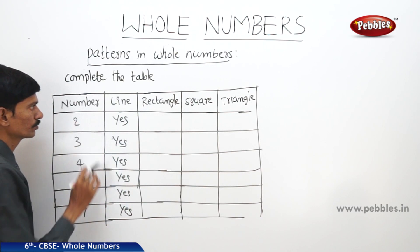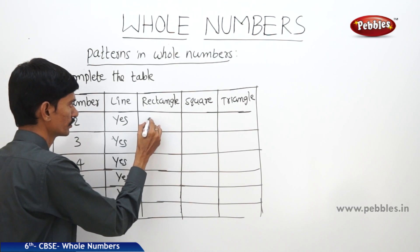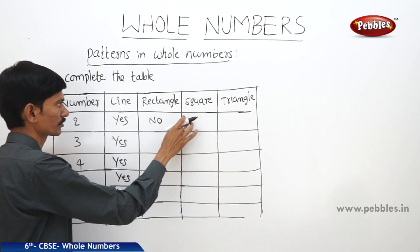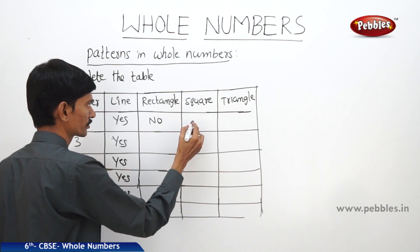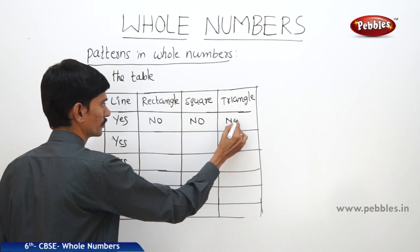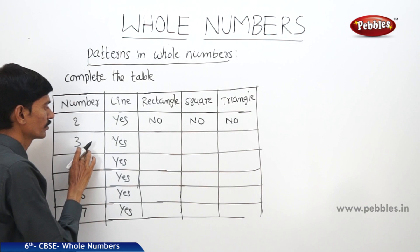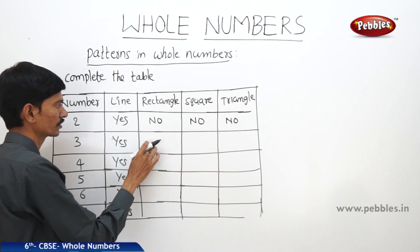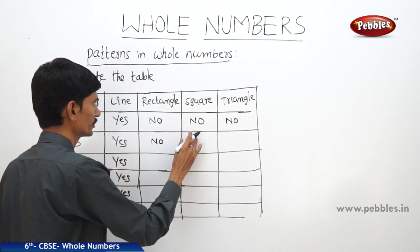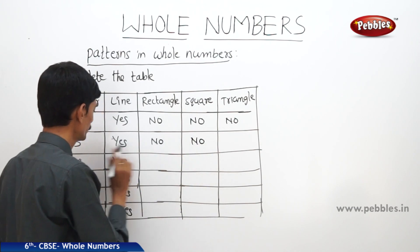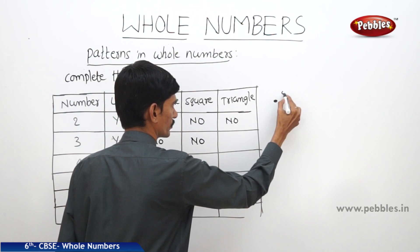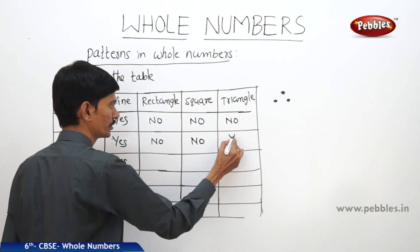Now rectangle. 2 cannot be shown as the rectangle, so we write no. Now whether 2 can be shown as a square or not — 2 cannot be shown as the square, so here also no. Now 3 cannot be shown as the rectangle, so we write no. Now 3 can be shown as the triangle because there are 3 dots, so we write yes.